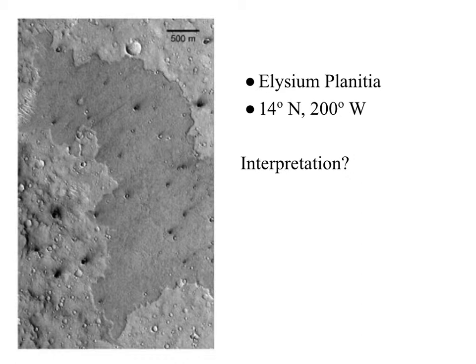Assuming this is a lava flow that flowed out over the surrounding area, what would the surface of that lava flow have been like right after it flowed? How many craters would there have been? Zero. What's going to happen over time? It's going to get hit, then sometime later hit again, and again. So over time, these surfaces accumulate craters. We would expect a numerical relationship between how many craters there are in an area and how old it is.